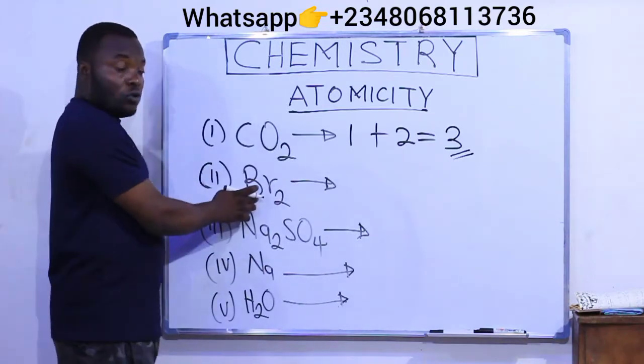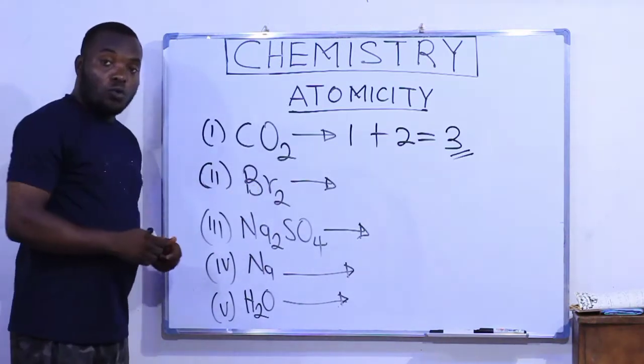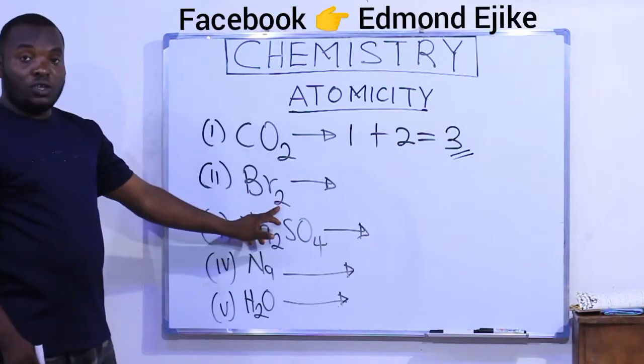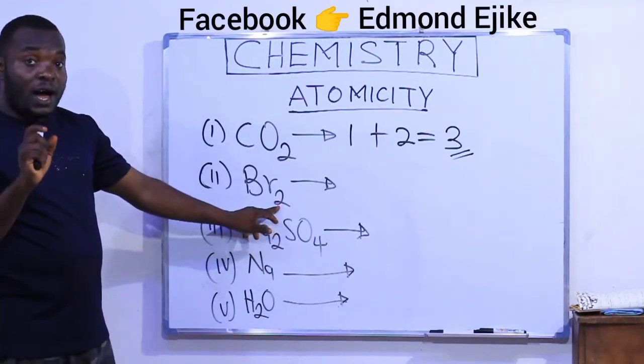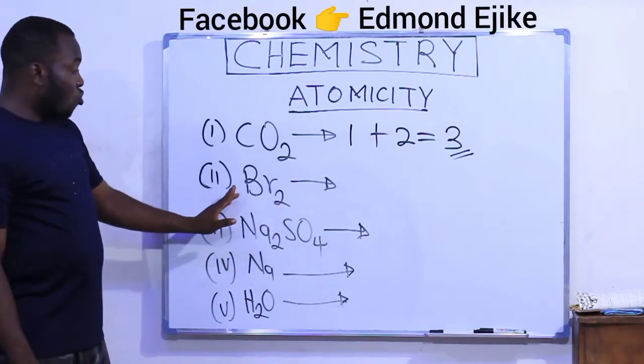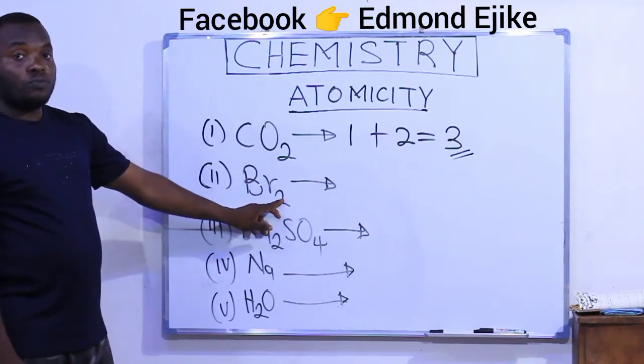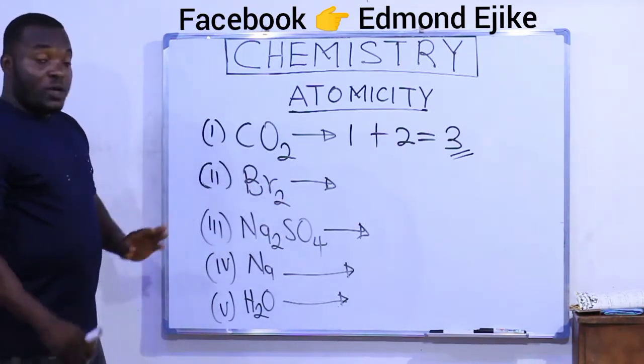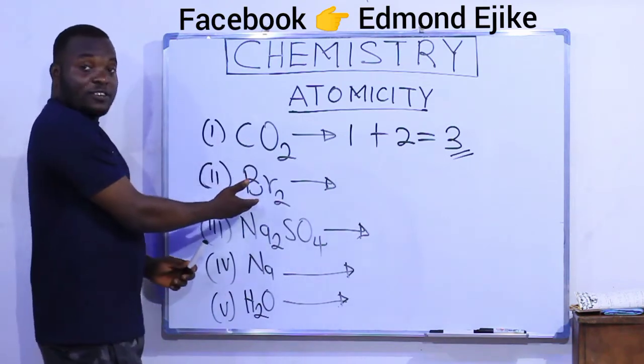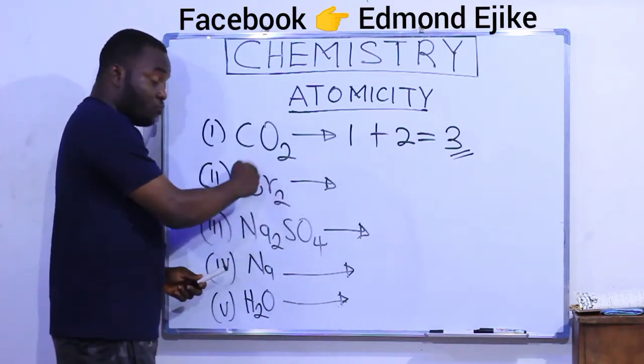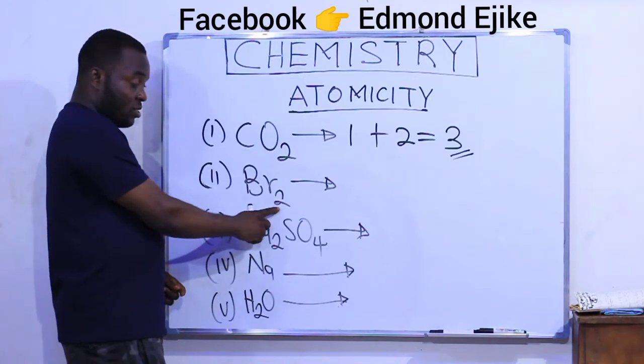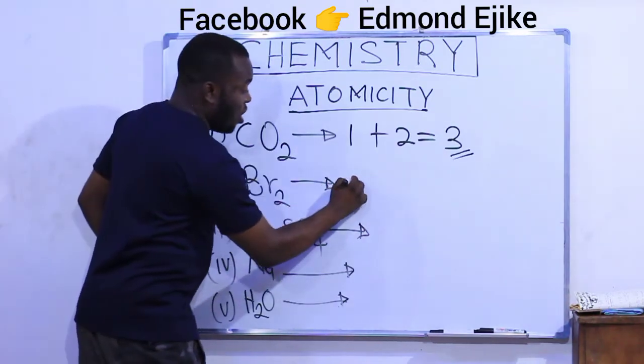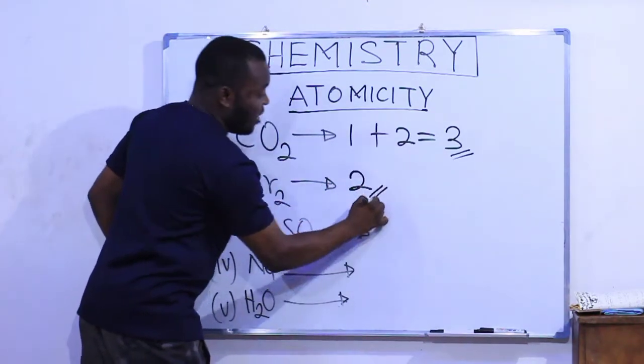Second one, we have to find the atomicity of bromine molecule. Remember, Br2 is bromine molecule while Br is bromine atom. So we are given bromine molecule and we are asked to find the atomicity. As you can see, the total number of atoms that make up this bromine molecule are two. That is, two bromine atoms. We have it as two, as our answer.